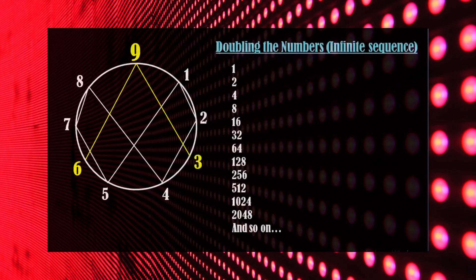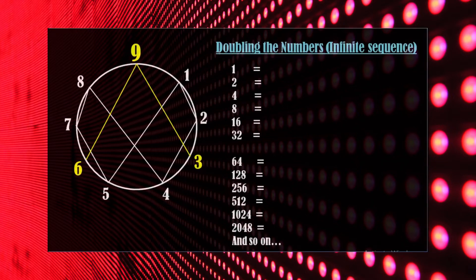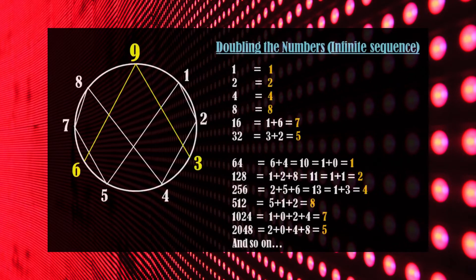Let's try to understand this sequence mathematically. Here is a sequence of doubling of numbers starting from number 1: 1, 2, 4, 8 and so on, where the next number is double the previous. We will convert all of these numbers into a single digit number by adding the digits until we get a single digit — this is called the digital root. Now observe the digital roots shown in orange color. You will see a repeated sequence of numbers 1, 2, 4, 8, 7, 5. Even if you repeat it to infinity, the same pattern repeats.